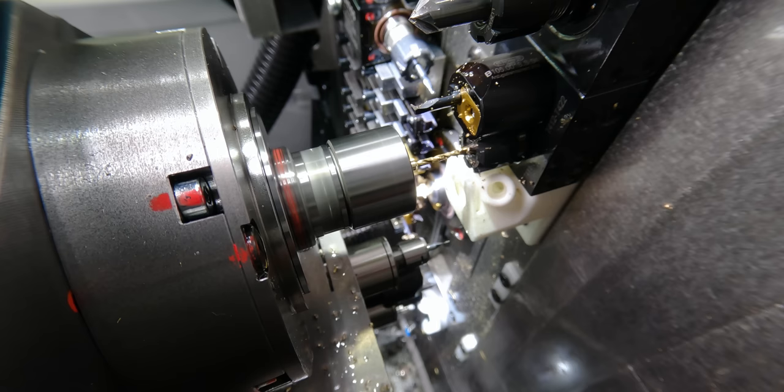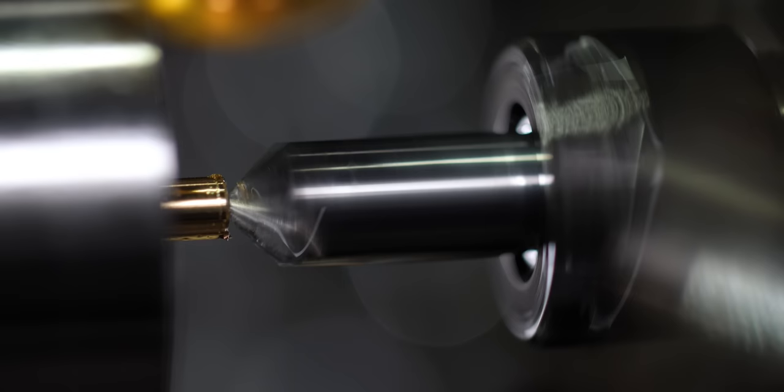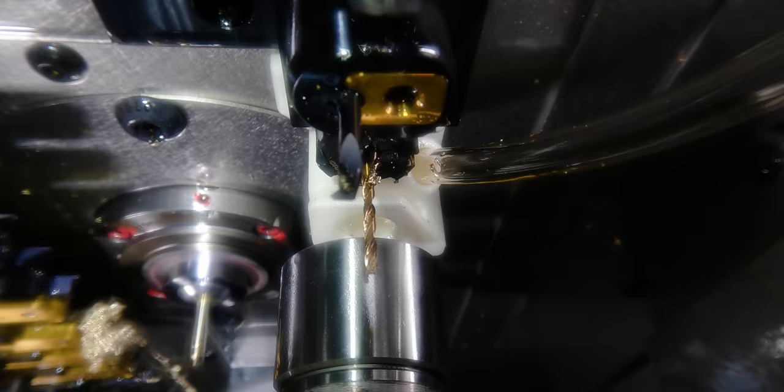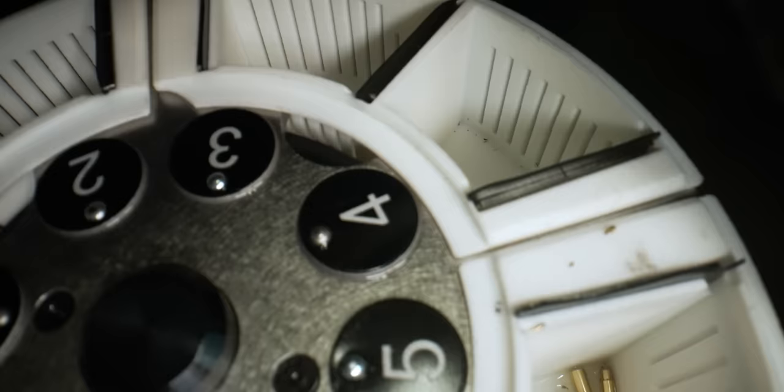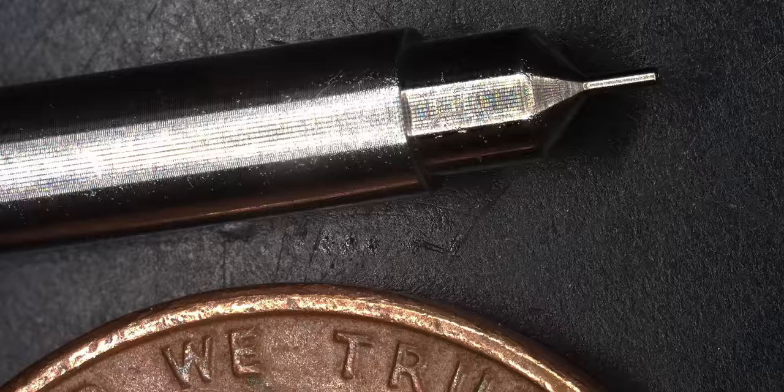So next operation we'll drill out the center of the part. And then after that all I have to do is spot it and eject it. It ejects the part and it goes down to our little carousel option we got here. And there you have a completed part.